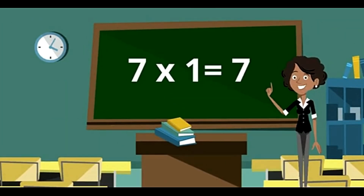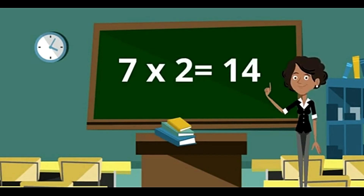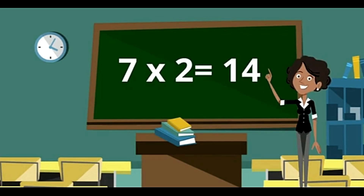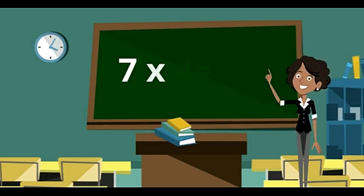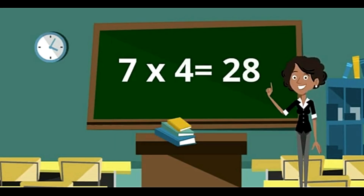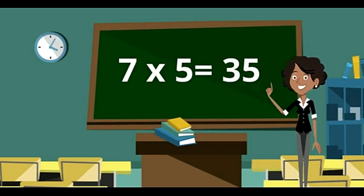7 ones are 7. 7 twos are 14. 7 threes are 21. 7 fours are 28. 7 fives are 35.